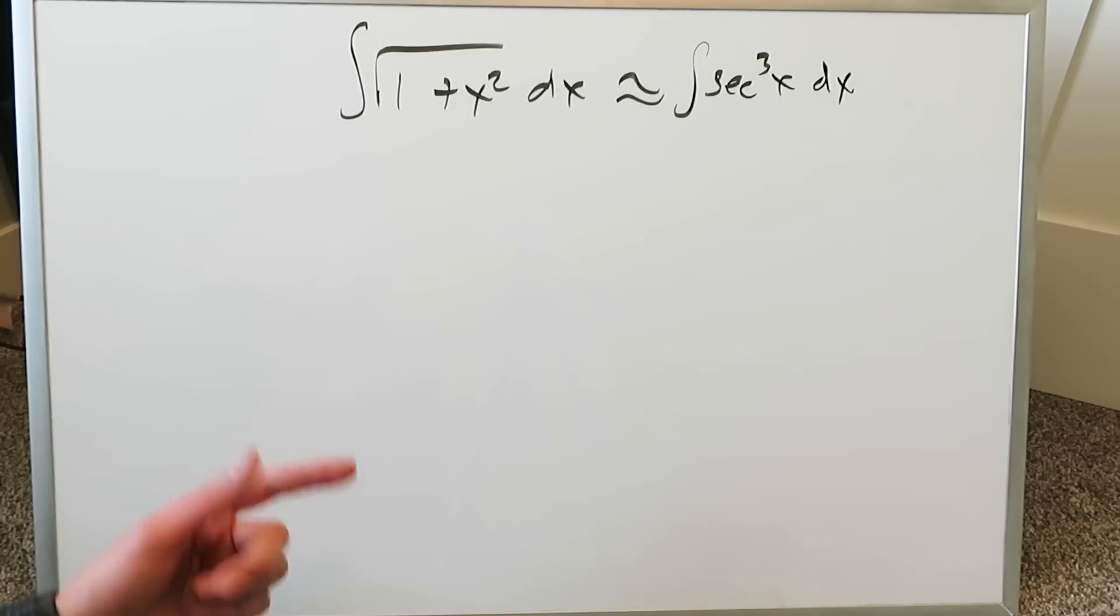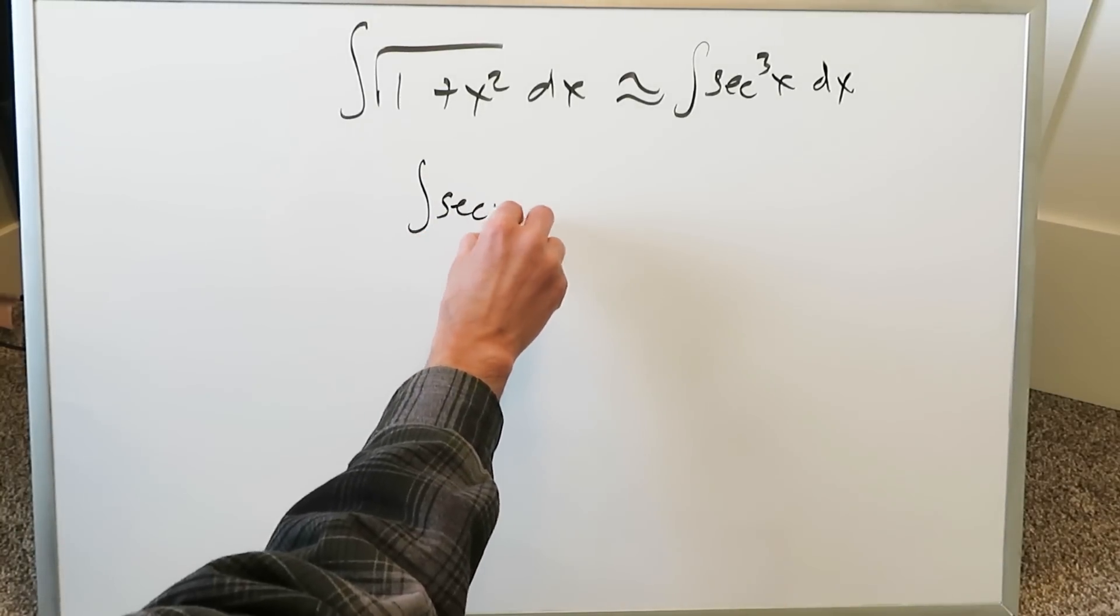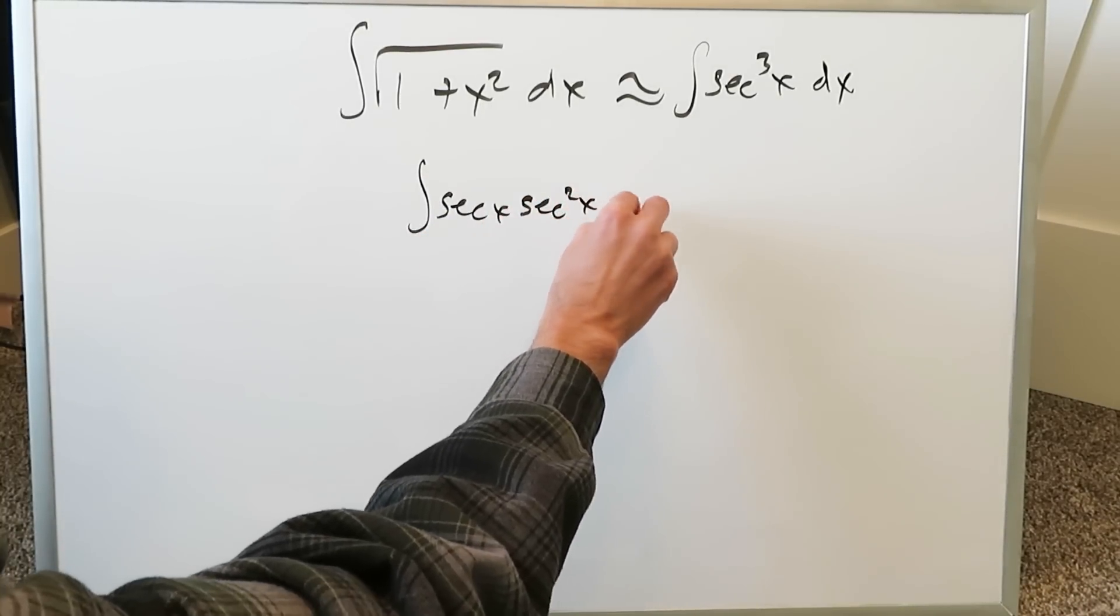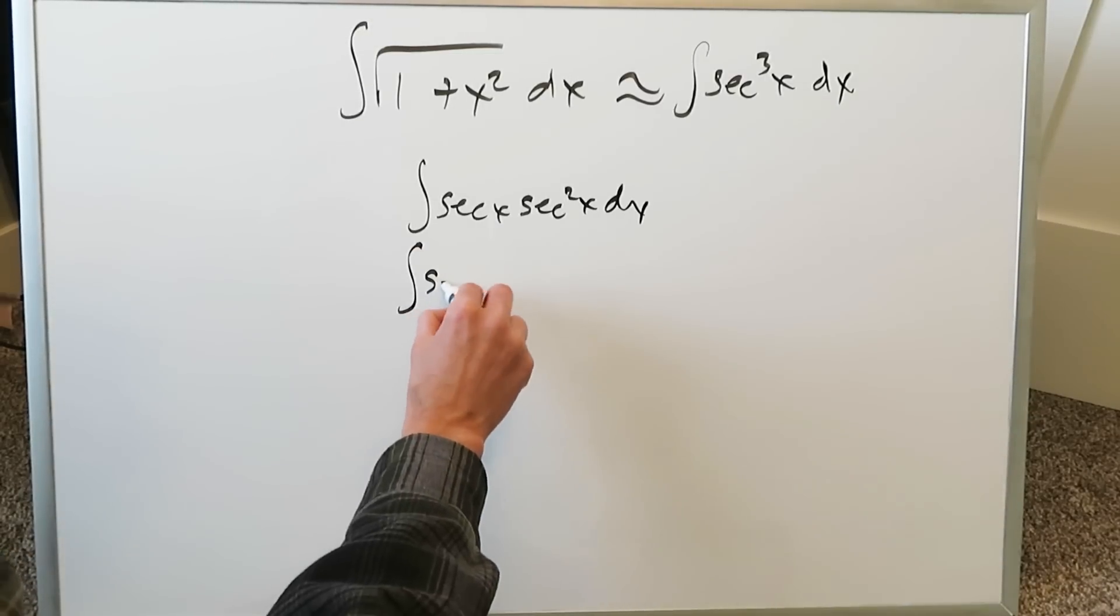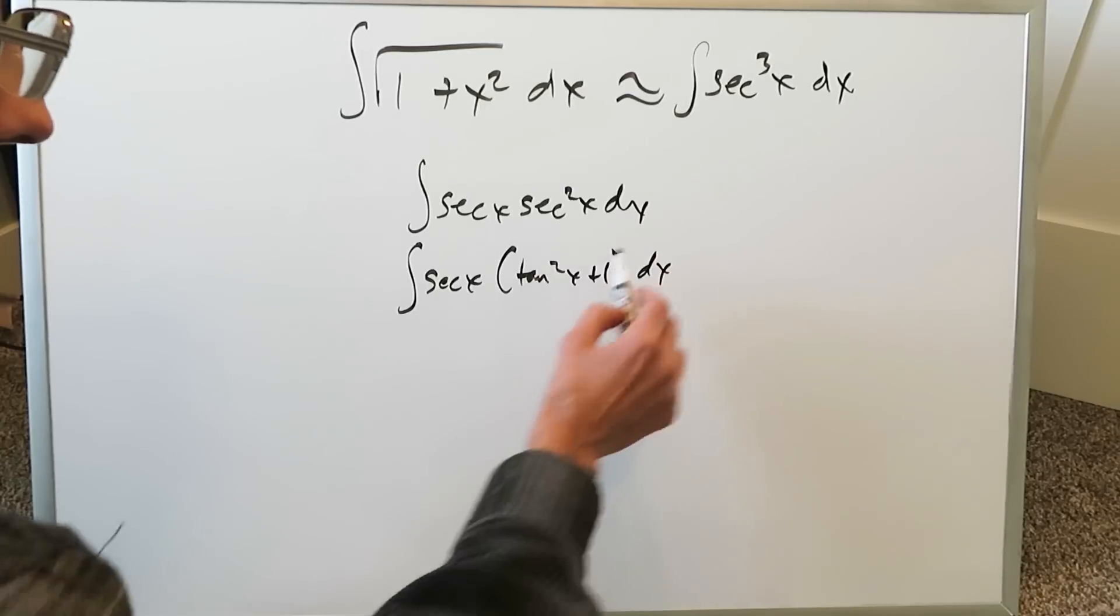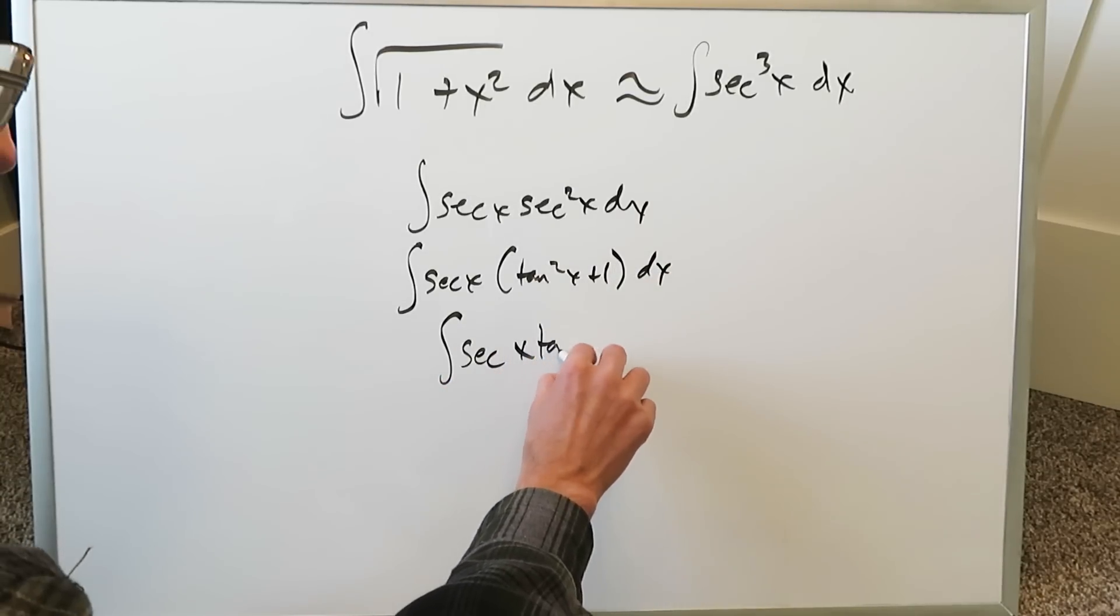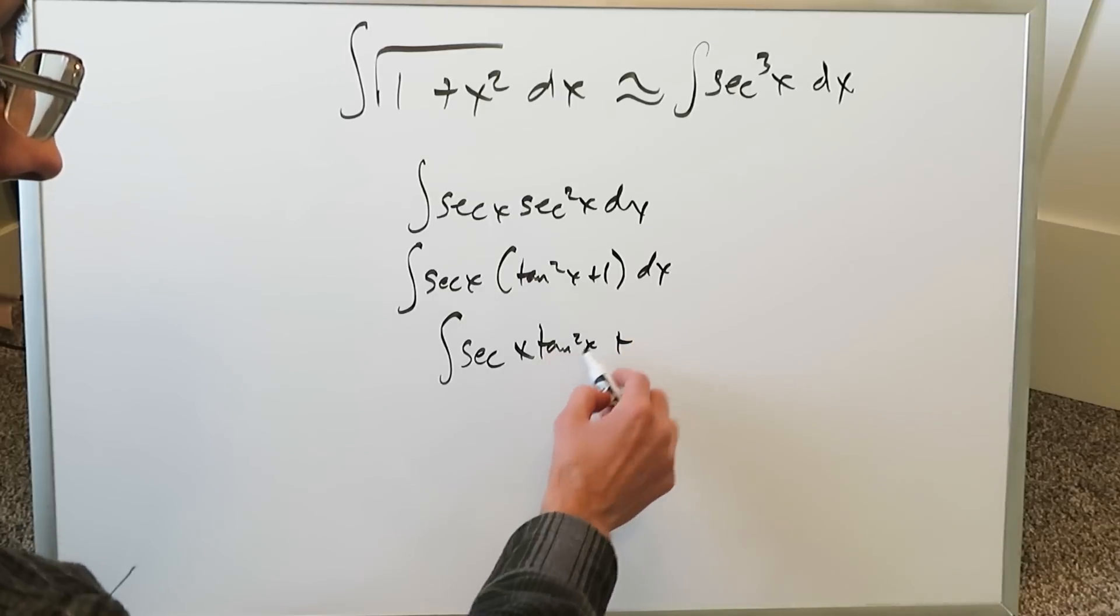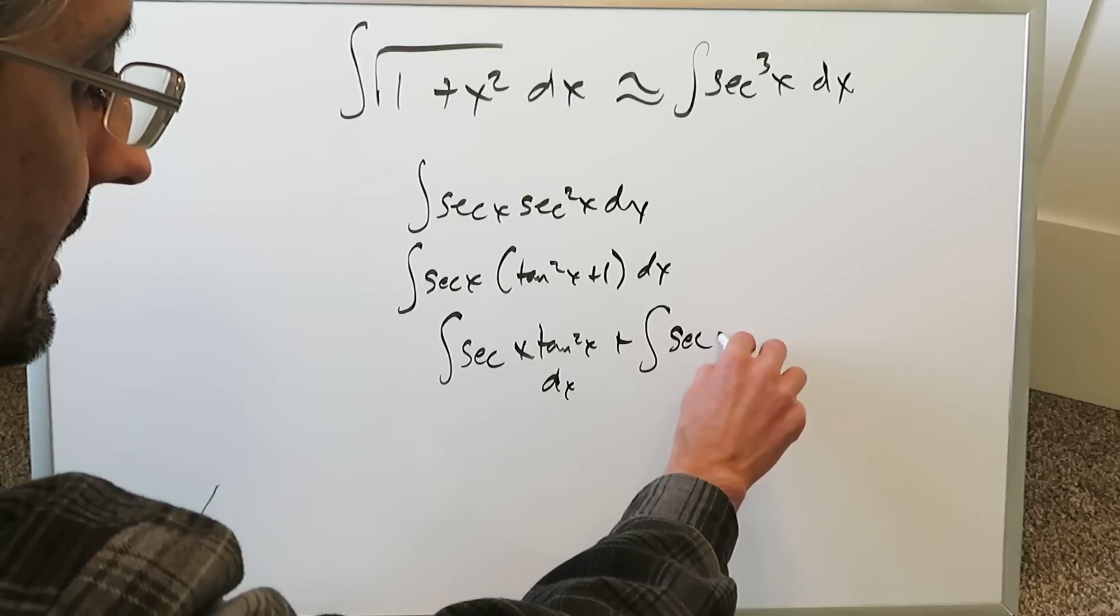The only problem is when you end up at that secant cube x it's not easily handled. The reason why is because you'll think of that as secant x times secant square x dx. When you think about that secant square x you're bringing in a trigonometric identity which is tan square x plus 1, and then you separate everything into their separate integrals. You have secant x tan square x plus dx and then secant x dx.